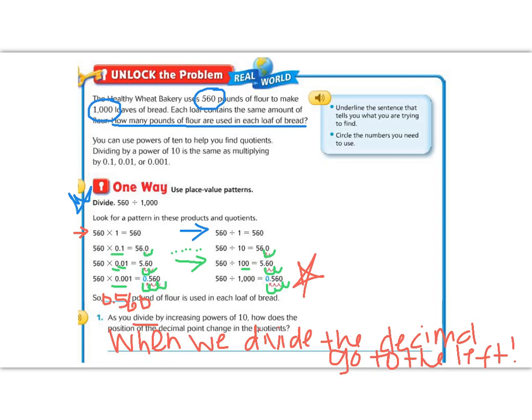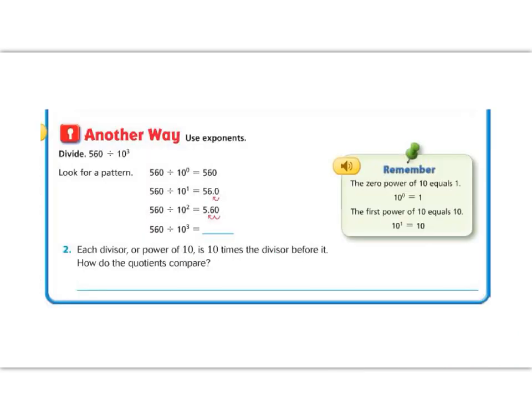Let's continue on with the another way. In the another way problem, we're going to use exponents. Again, this is similar to what we did in the previous unit. So we need to remember that when we have exponents, as it says over here, that if we have the 0 power of 10, then it is a 1 with 0 zeros. So 560 divided by 10 to the power of 0 is 560 divided by 1. And anything divided by 1 doesn't change. So we get 560 back out.